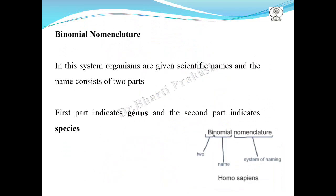Binomial nomenclature — bi means two, nominal means name, and nomenclature means the system of naming. So in this system organisms are given scientific names consisting of two parts: the first name indicates the genus and the second part indicates the species.